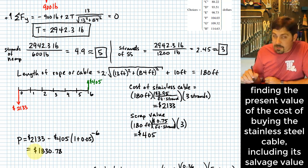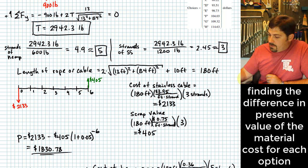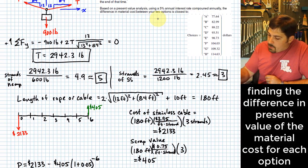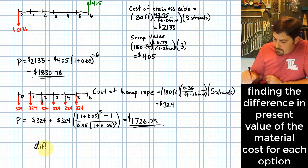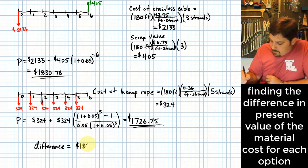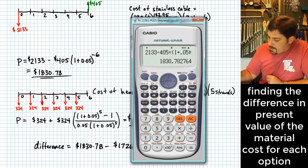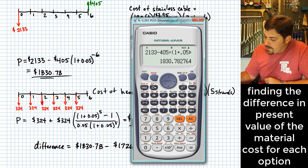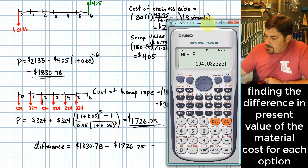Plugging those values in: 2133 − 405 × (1.05)^(−6) = $1830.78. That's basically how much the stainless steel option costs in a present value sense. Now the question is: what's the difference? The difference is $1830.78 − $1726.75 = $104.03.